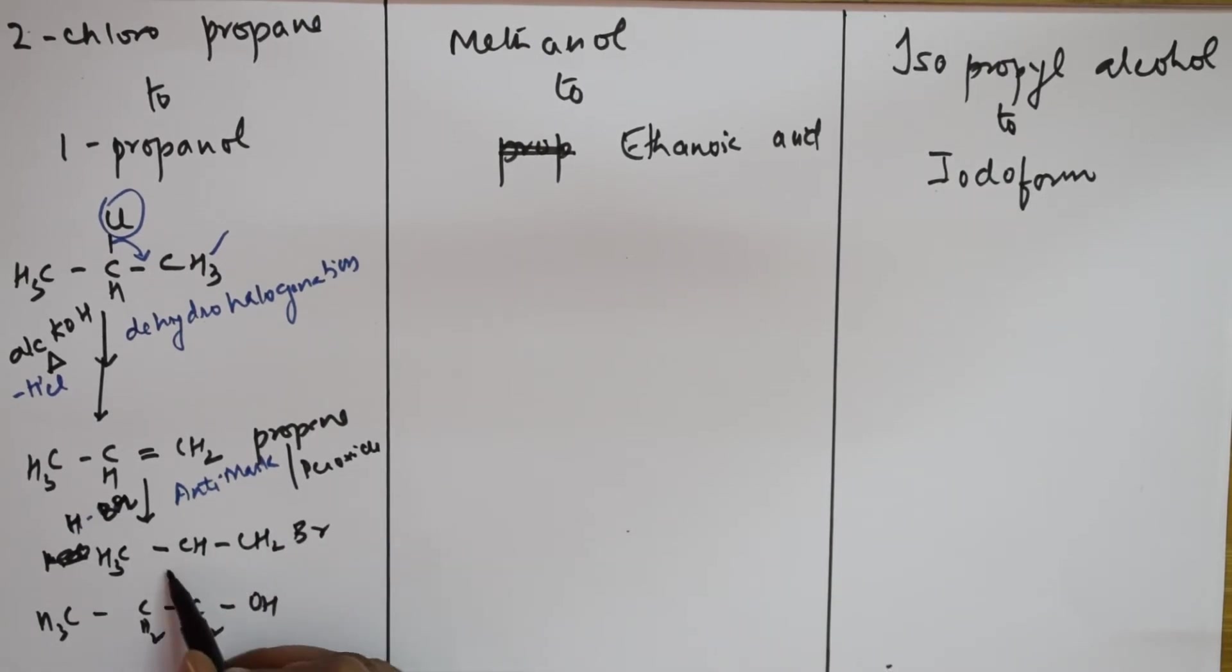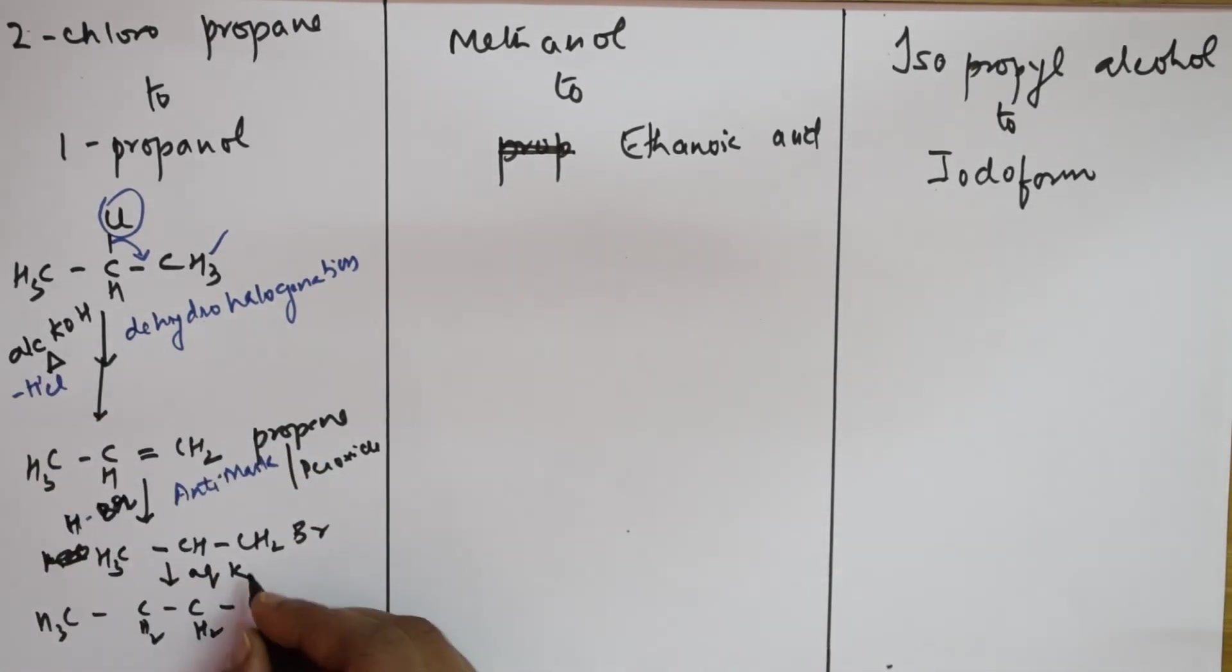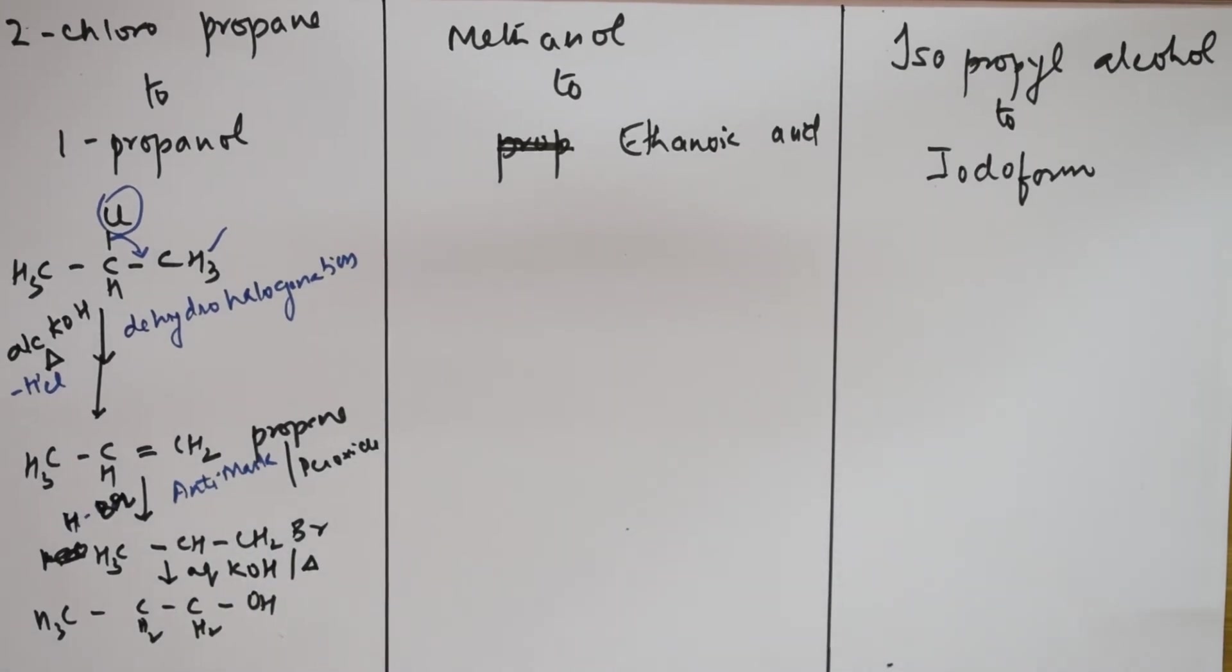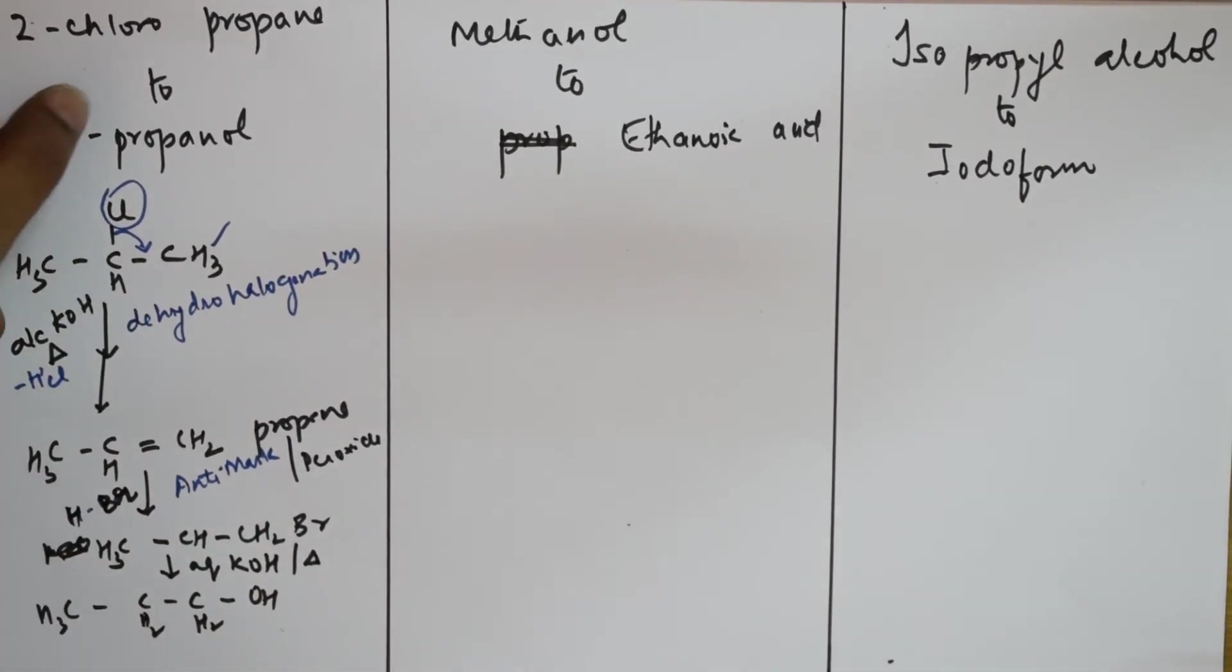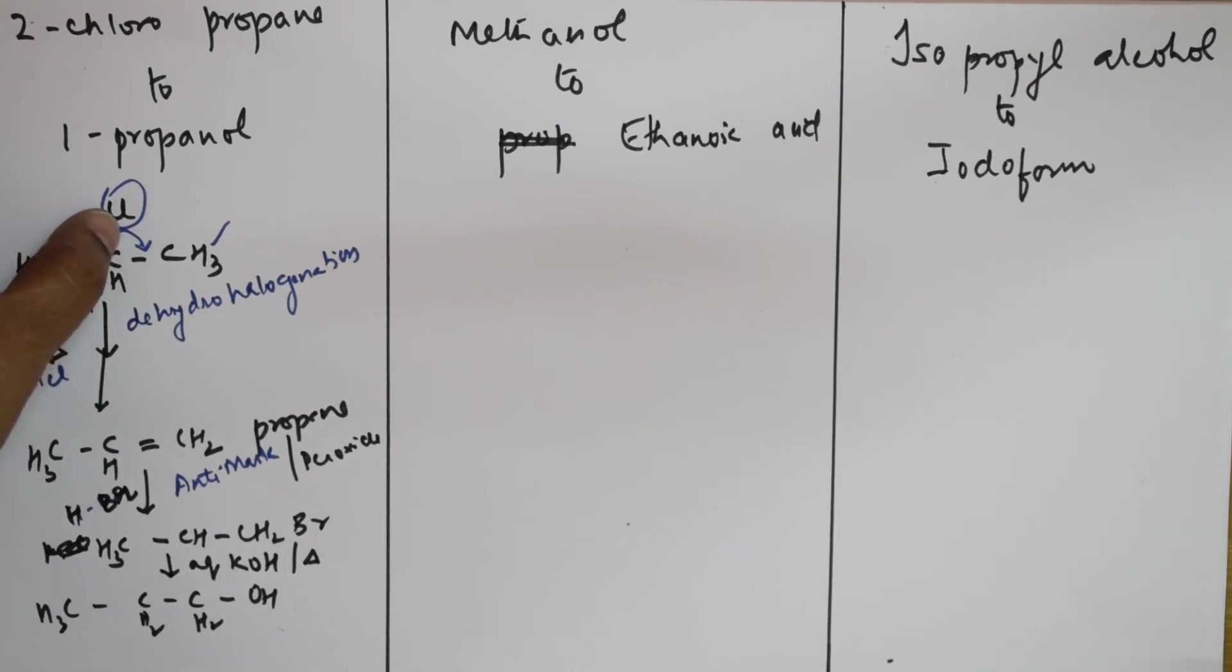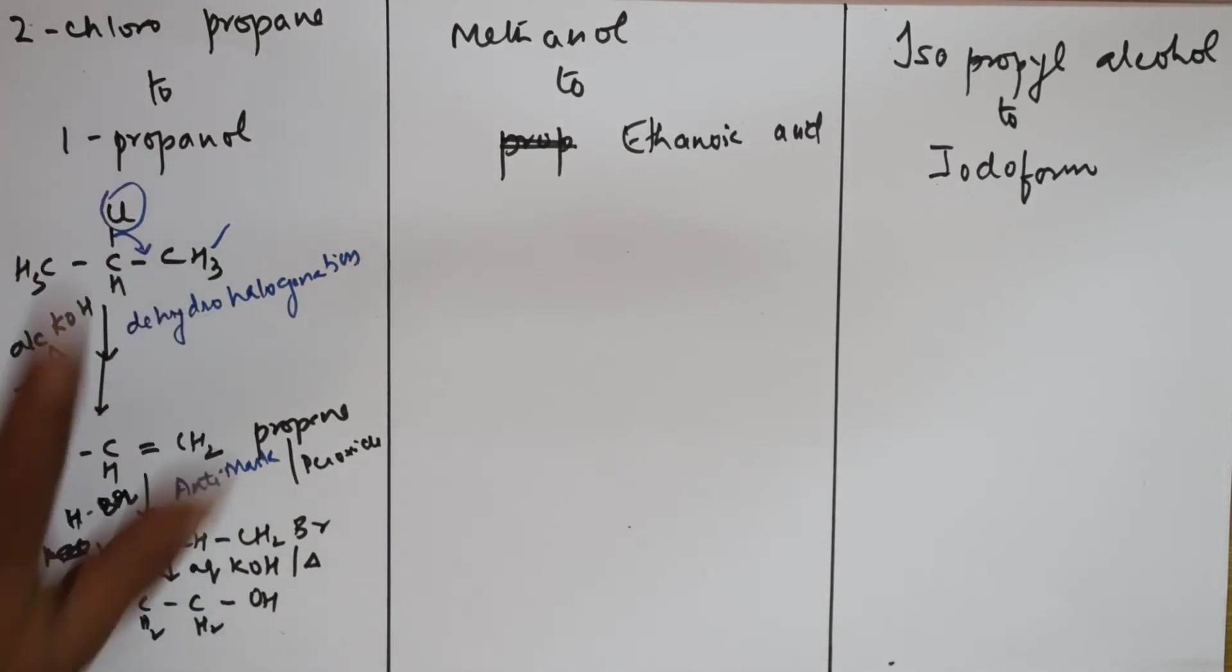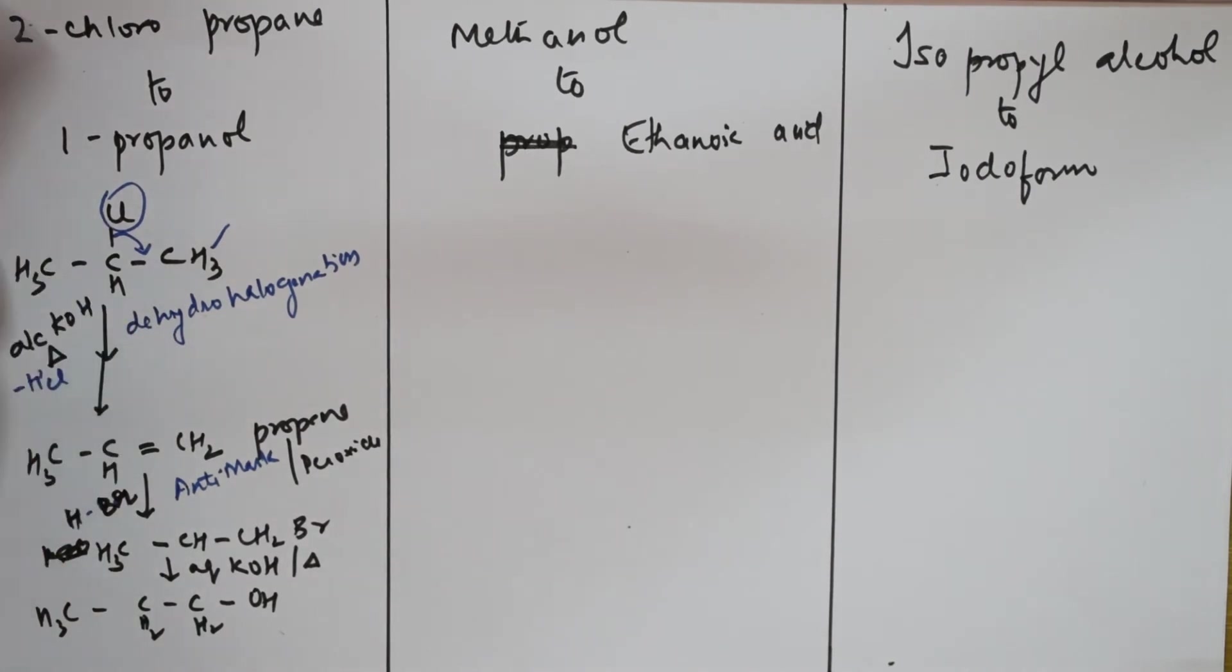This is your terminal bromine. Now I can easily substitute this OH with this. What can I do? Aqueous KOH - here alcoholic KOH, here aqueous KOH - on heating I get terminal. So 2-chloropropane I got. What is the difference? This is in second position chloro, this is in the terminal carbon hydroxyl.